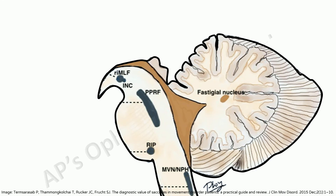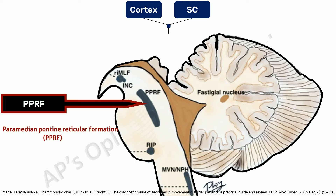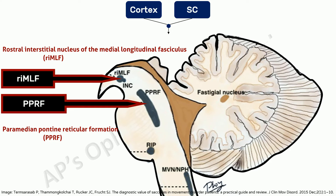Following input from the cortex and superior colliculus, the generation of horizontal saccades takes place in the paramedian pontine reticular formation or PPRF of the pons, and generation of vertical and torsional saccades takes place in the RIMLF, or rostral interstitial nucleus of the medial longitudinal fasciculus, of the midbrain. The pulse or velocity command is generated in these nuclei.